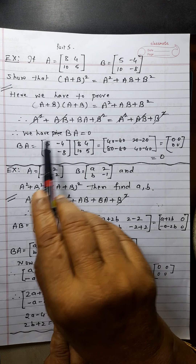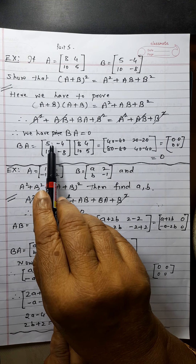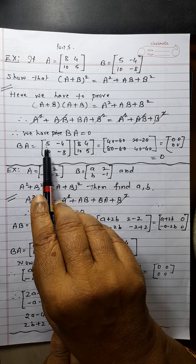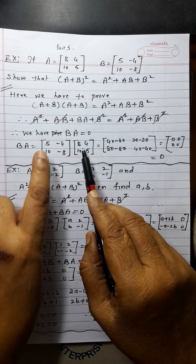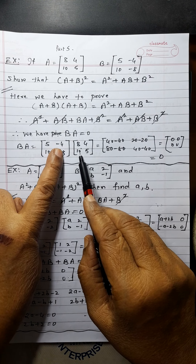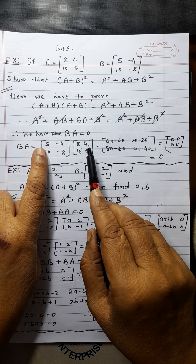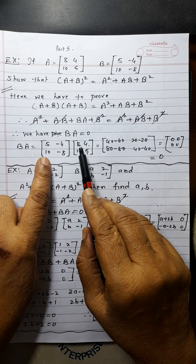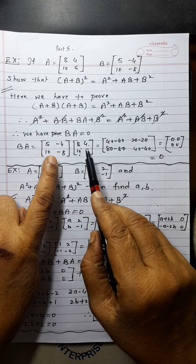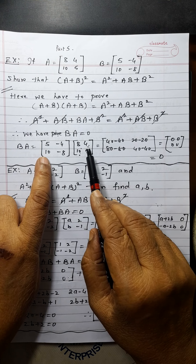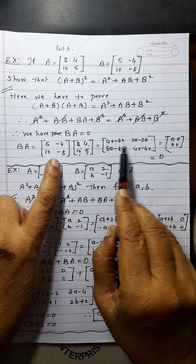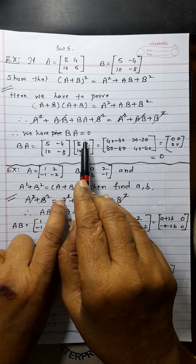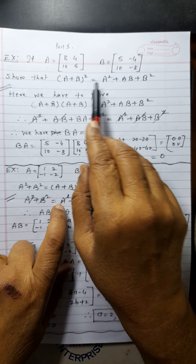So BA equals 0. I will write B first, then A — order is important in matrix multiplication. B times A: 8×5 gives 40 minus 40, 20 minus 20, 80 minus 80, 40 minus 40. Every term gives 0, so this is the zero matrix. We have proved BA = 0, which means (A+B)² equals A² + AB + B².